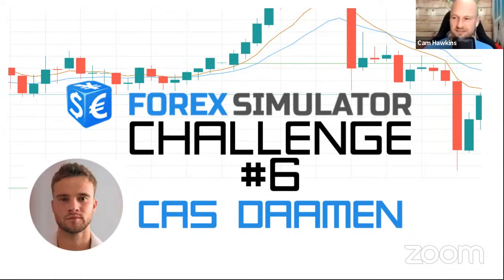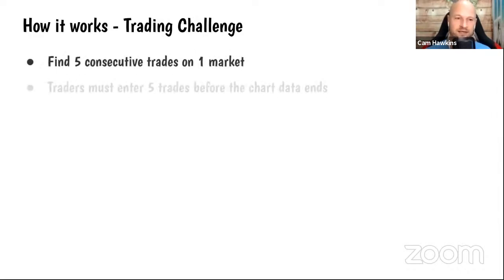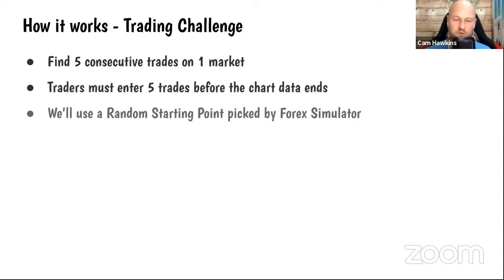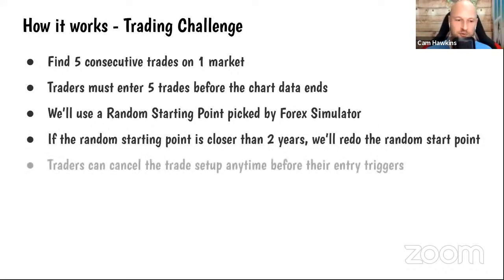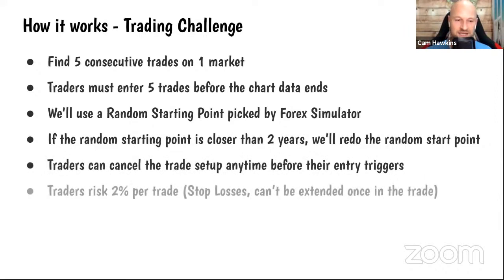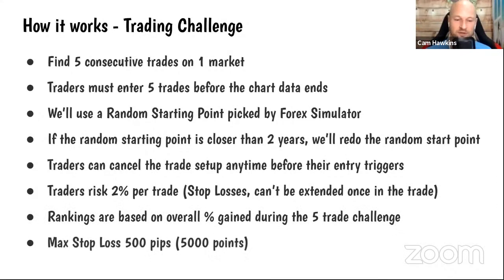Let's get this underway and go through the rules. Someone asked if he's doing six trades in one night — no, this is a five-trade backtest trading challenge. Five consecutive trades on one market; traders must enter all five trades before the chart data ends. We use a random starting point picked by the Forex Simulator. If the starting point is closer than two years, we redo it. Traders can cancel their trade setup anytime before entry triggers. You only risk two percent per trade, stop losses can't be extended once in the trade, and rankings are based on overall percent gain.